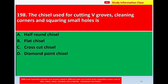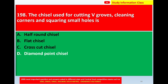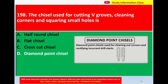Next, question number 198: the chisel used for cutting V grooves, cleaning corners, and squaring small holes. Option A: half round chisel. Option B: flat chisel. Option C: cross cut chisel. Option D: diamond point chisel. The correct answer is option D, diamond point chisel. The diamond point chisel is used for cleaning out corners and rectifying inclined drill starts.